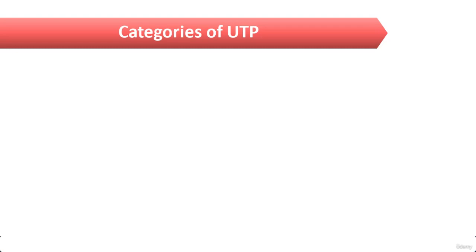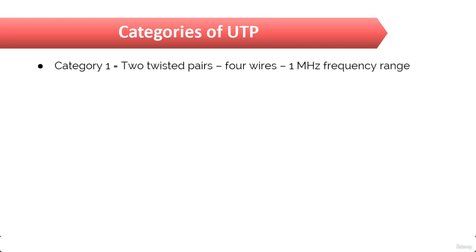Category 1 has two twisted wire pairs, which means a total of four wires. Category 1 is the oldest type and it is the only voice grade, which isn't rated for data communication. People refer to it as Plain Old Telephone Service, that is POTS, and before 1983 this was the standard cable used throughout the North American telephone system.